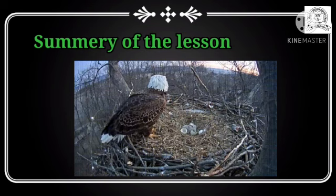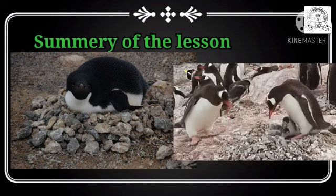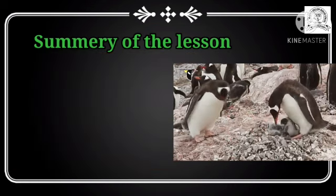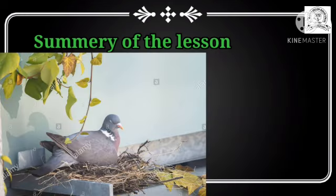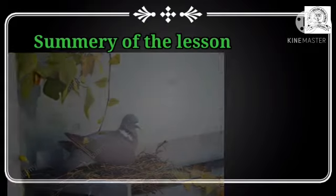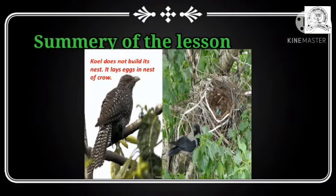The penguin is a flightless bird that builds its nest using stones or pebbles. Sparrows and pigeons build their nests in vacant places — vacant homes or buildings where there are no persons. Koel and cuckoo cannot build their own nests and lay their eggs in a crow's nest, which is why they are called parasites or lazy birds.